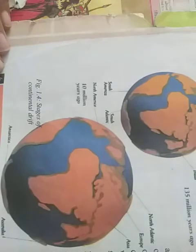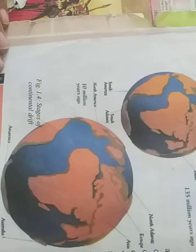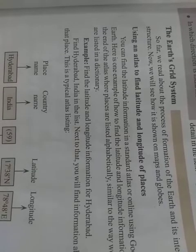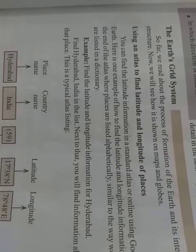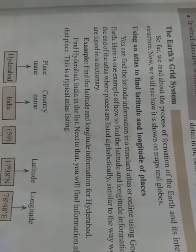Here, North Atlantic, Europe, Asia and Australia, Antarctica - it is in Angara land. You can see here, these are the stages of continental drift. Who introduced continental drift? Alfred Wegener. Now let's see what is in the next topic. The Earth's grid system. So far we read about the process of formation of the Earth and its internal structure. Now we will see how it is shown on the map and globe.